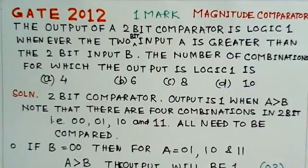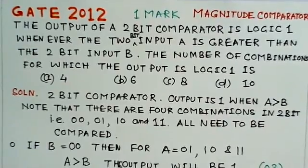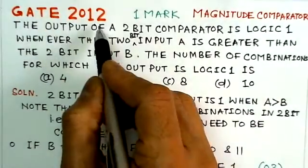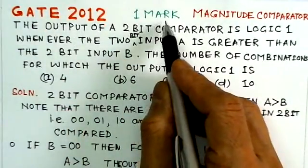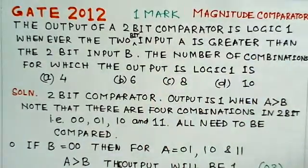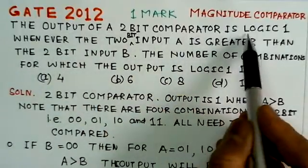This problem is the third problem in the set of these problems, GATE 2012, 1 mark, magnitude comparator. We'll read out the problem here. The output of a 2-bit comparator...